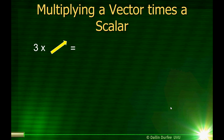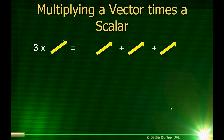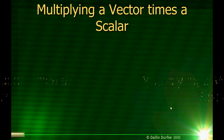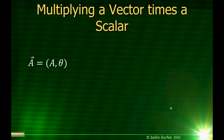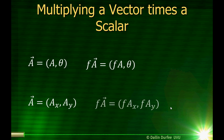Now we know how to add vectors together. How do we multiply a vector and a scalar? If I have 3 times a vector, that means that vector plus that vector plus that vector — adding it together 3 times. If I add the same vector together 3 times, I stack them together and end up with a vector in the same direction but 3 times as long. In polar coordinates, f times a — where f is a scalar — I just multiply the magnitude of a times f. In Cartesian coordinates, each component simply gets multiplied by that scalar.